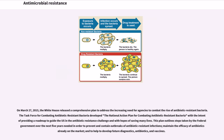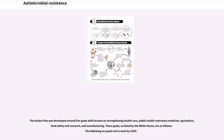On March 27, 2015, the White House released a comprehensive plan to address the increasing need for agencies to combat the rise of antibiotic-resistant bacteria. The Task Force for Combating Antibiotic Resistant Bacteria developed the National Action Plan for Combating Antibiotic Resistant Bacteria, providing a roadmap to guide the U.S. in the antibiotic resistance challenge. This plan outlines steps taken by the federal government over the next five years needed to prevent and contain outbreaks of antibiotic-resistant infections, maintain the efficacy of antibiotics already on the market, and help develop future diagnostics, antibiotics, and vaccines. The action plan was developed around five goals with focuses on strengthening health care, public health, veterinary medicine, agriculture, food safety and research, and manufacturing.